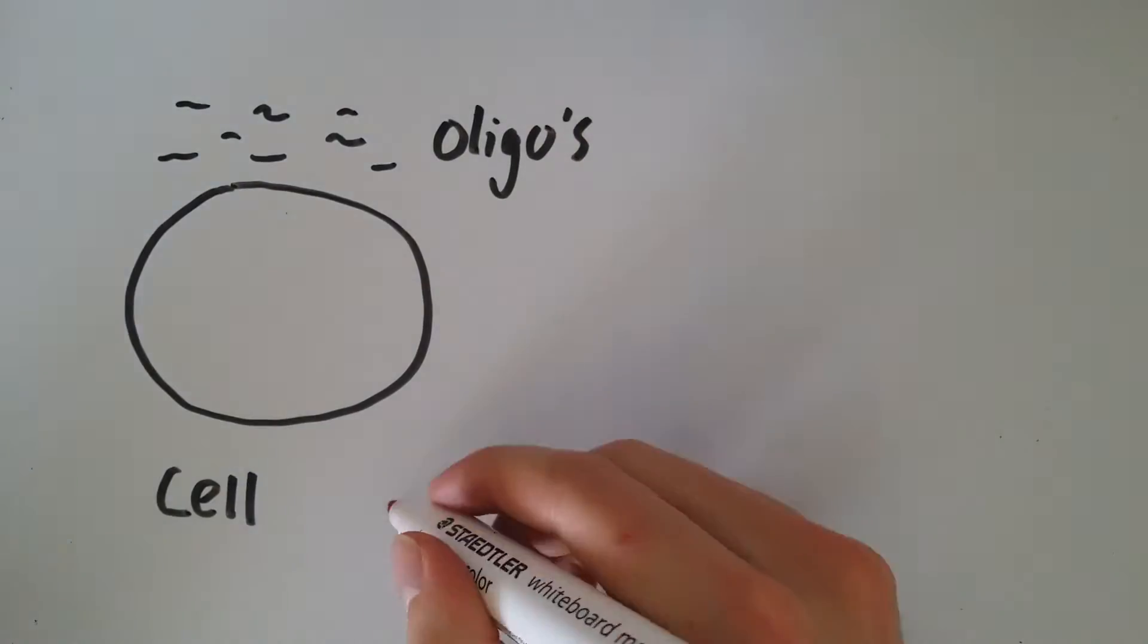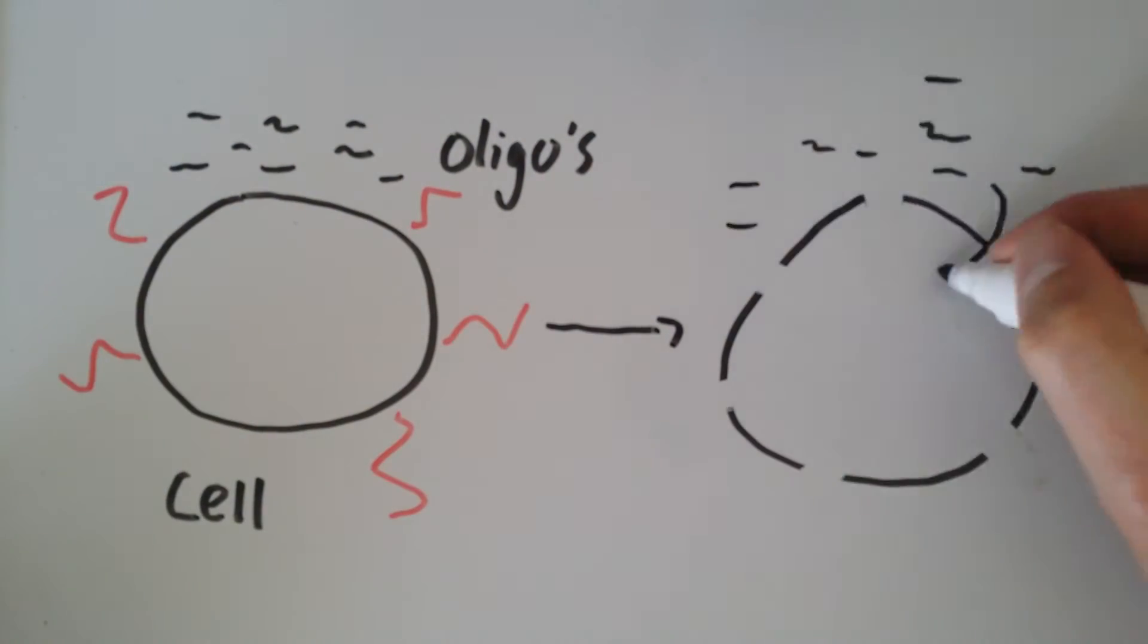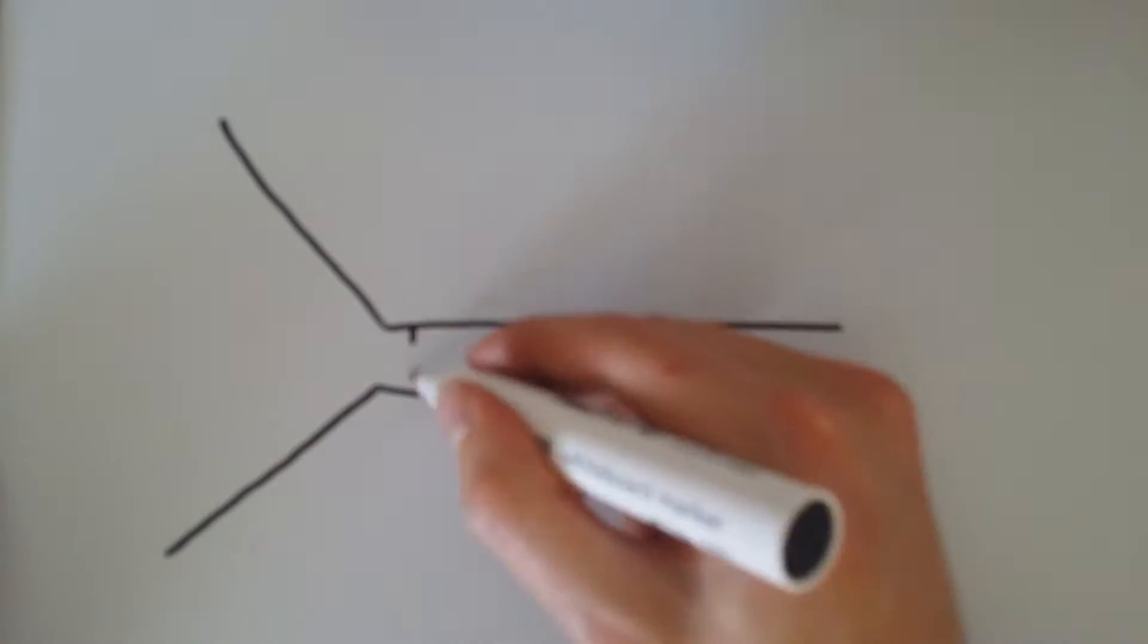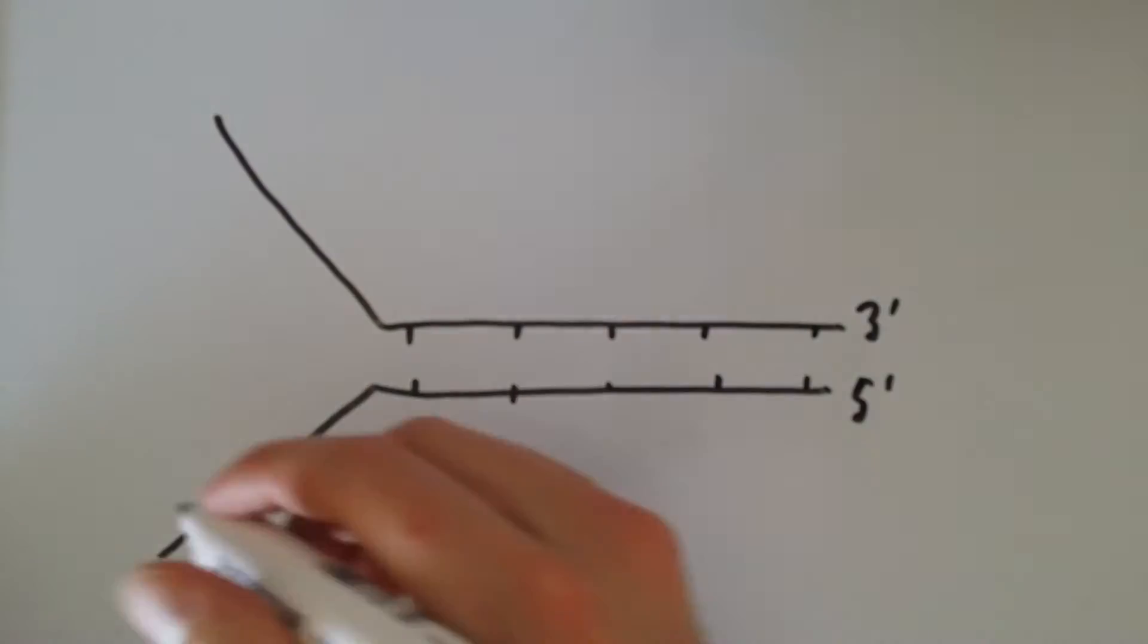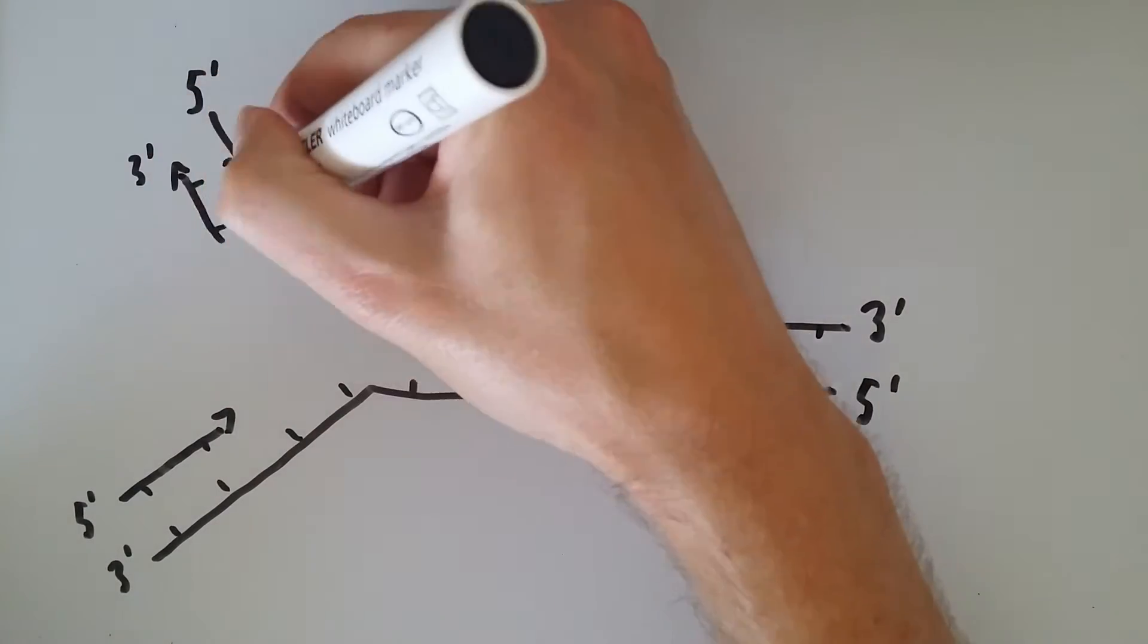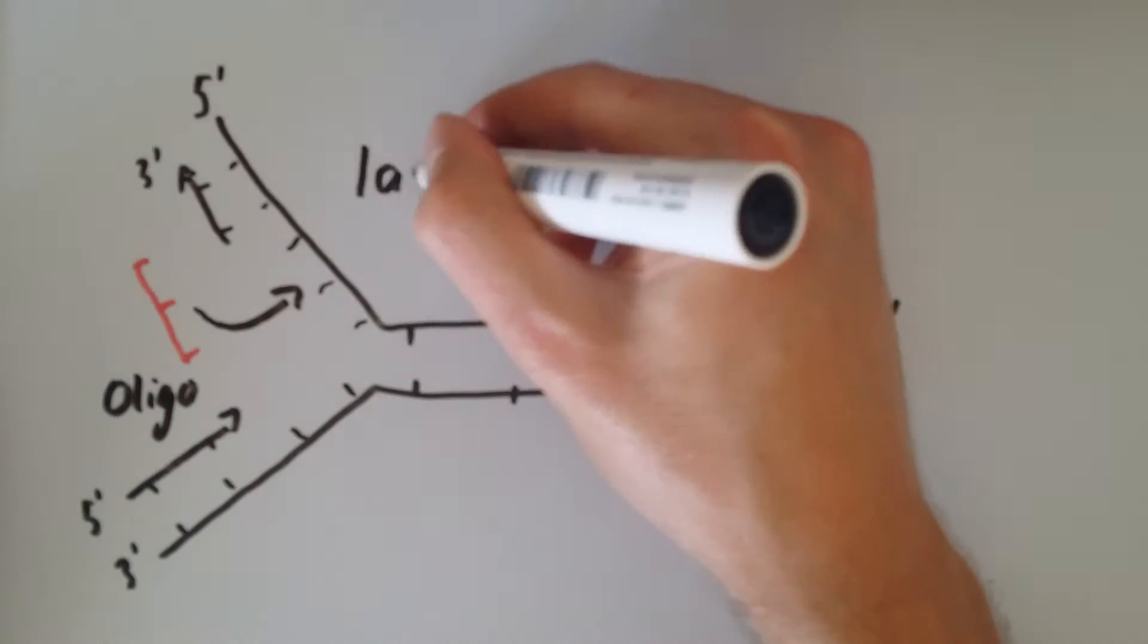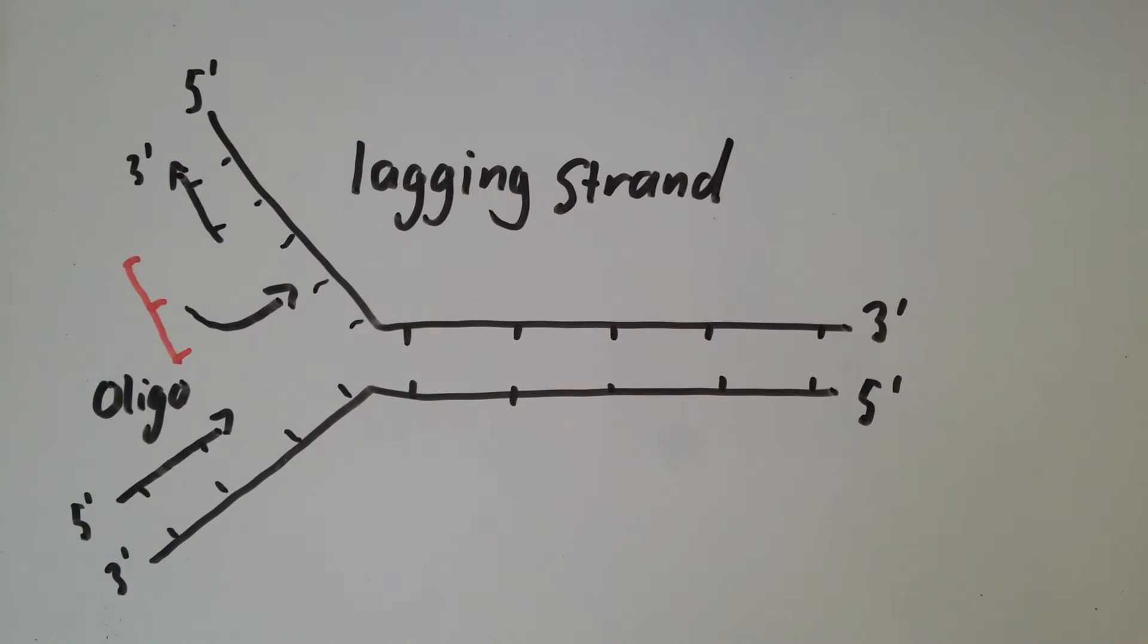Once the oligos have been made, they are moved into the cells by electroporation. The oligos then bind to their complementary sequence, which is exposed at the DNA replication fork as cells prepare to divide. The lagging strand is more exposed, and so this is where the oligos bind.